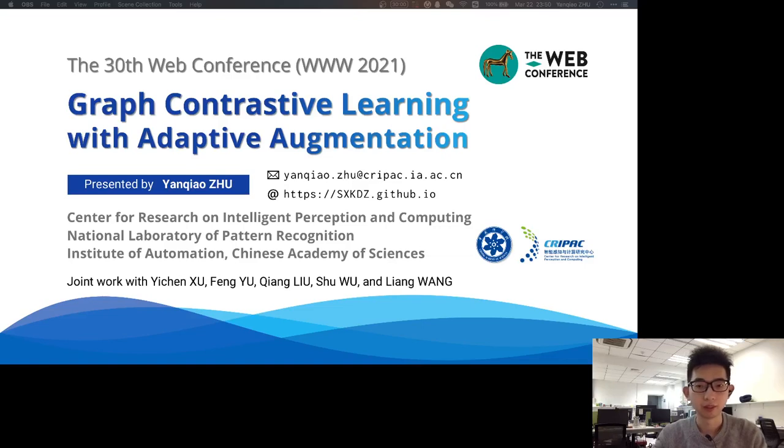Hello everyone, I'm Yanqiao from the Center for Research, Orientation, Perception and Computing, Institute of Information, Chinese Academy of Sciences. It's my pleasure to introduce our recent work on graph contrastive learning with adaptive augmentation. This is a joint work with my intern and supervisors from the Institute.